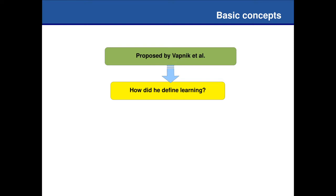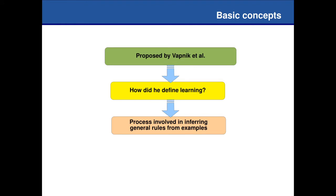Statistical learning theory was proposed by Vapnik in conjunction with some collaborators, though Vapnik himself was the main author. He started around 1965 defining learning. He came up with a definition for learning which nowadays we consider the same definition as what is referred to as generalization. We have to infer some general rule — that is the basics of learning.